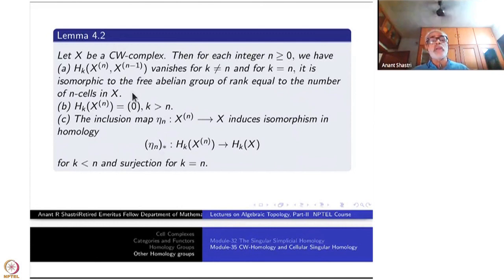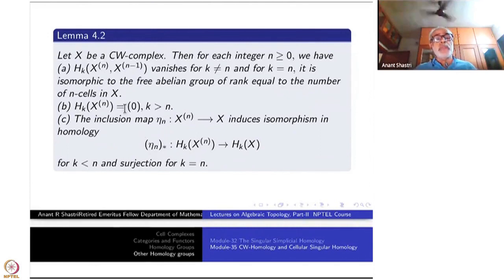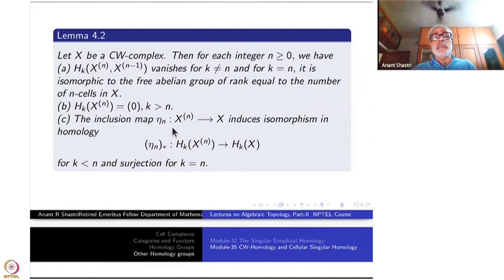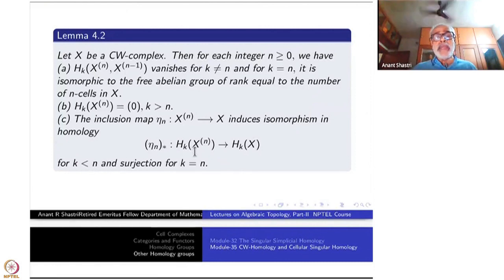This is a consequence of the previous lemma. The second thing is HK of XN is 0 if K is bigger than N - that means if you have an N-dimensional CW complex, all the homology beyond N, namely N+1, N+2, etc., are all 0. The inclusion map, let us denote it by eta_N from the N-skeleton to the whole space X, induces isomorphism in homology HK to HK where K is less than N, and surjection for K equal to N.